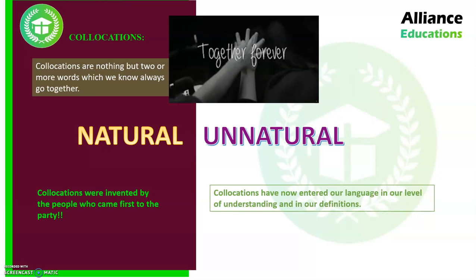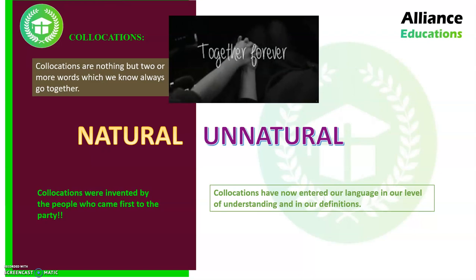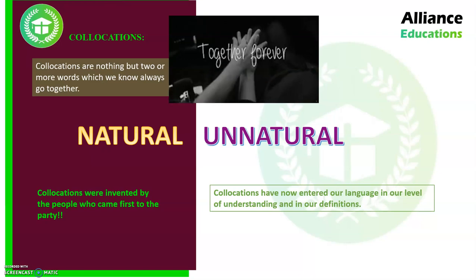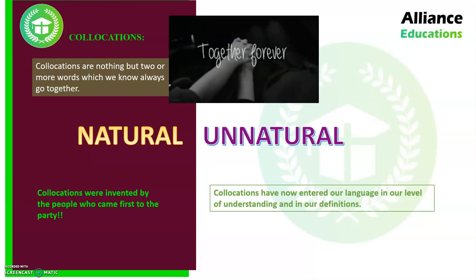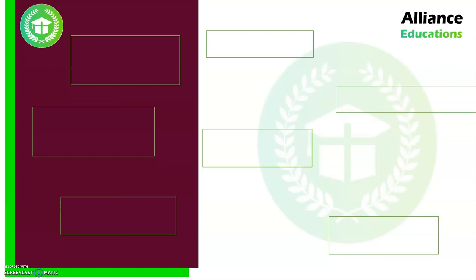Now collocations have become so established that their meaning has become fixed in our minds. For example, 'fast food' creates a very specific image. There is no 'quick food' in our dictionary or in our definitions. There are different types of collocations — seven types in all. There may be many more being invented every day, but the basic types are what we need for identification and formation.